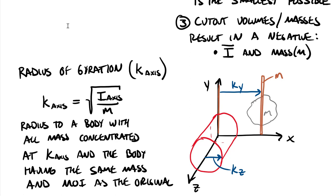Practically, you'd never melt a steel I-beam into a thin rod, but combining moment of inertia and mass into one term makes analysis and table look-up much easier in structural engineering or machine design classes — for example, simplifying column sizing calculations when worried about which direction a column might buckle under compression.